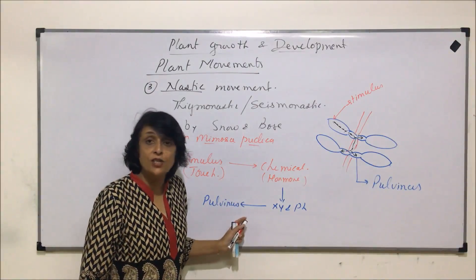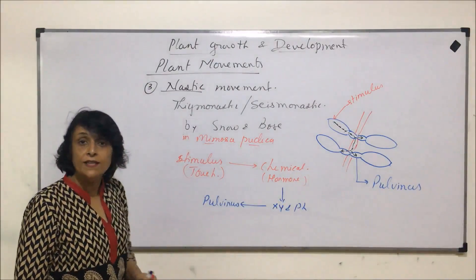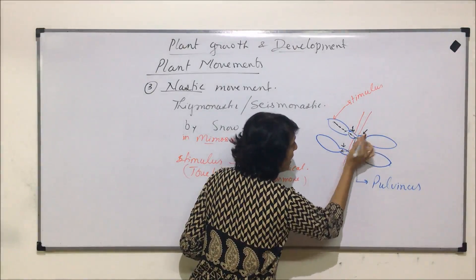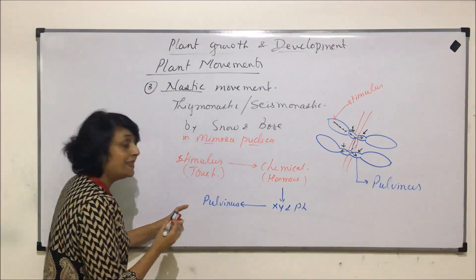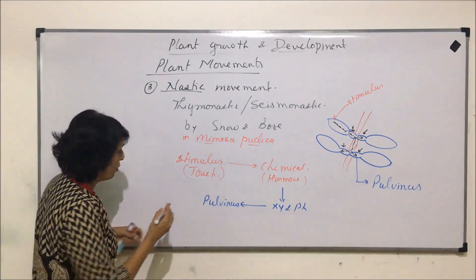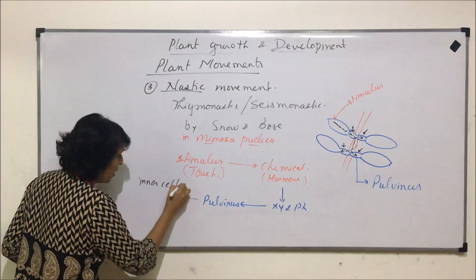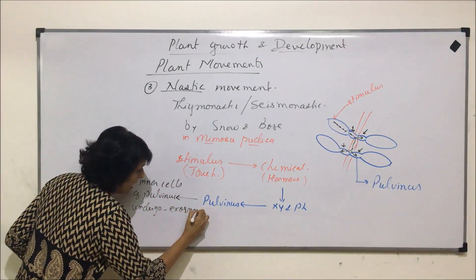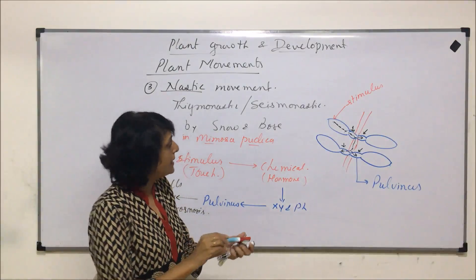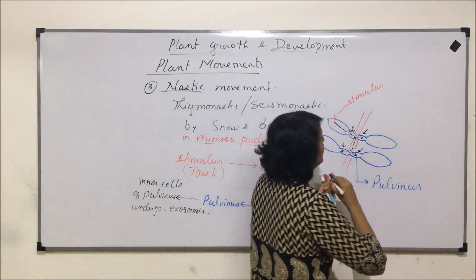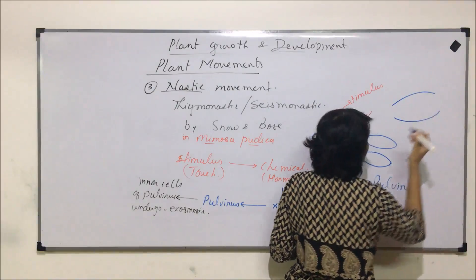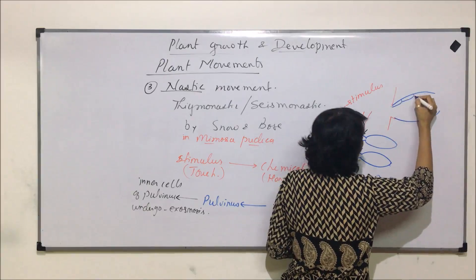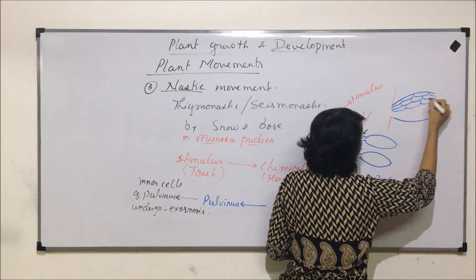Once the chemical has reached the base of the leaf — the pulvinus — the cells of the pulvinus on the inner side, meaning the cells towards the branch on which the leaves are attached, undergo exosmosis. To understand how this exosmosis starts, we enlarge the pulvinus and draw all its cells.